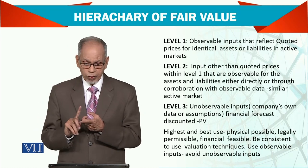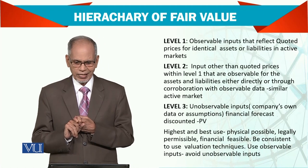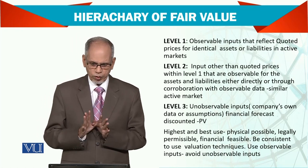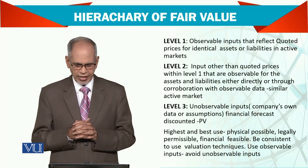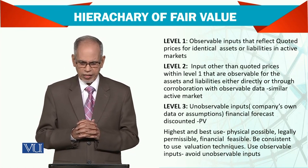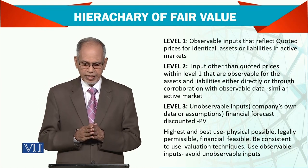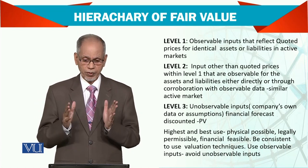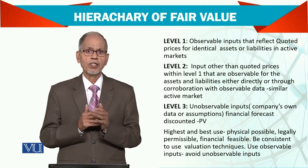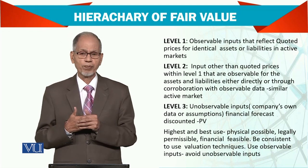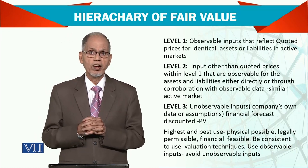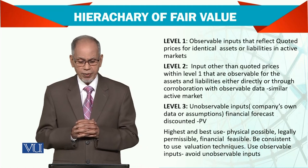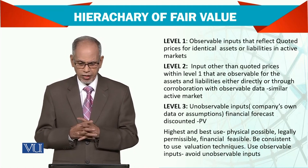Level 1 consists of observable inputs that reflect quoted prices for identical assets or liabilities in an active market — meaning you have full information about the market where buying and selling is happening. Level 2 consists of inputs other than quoted prices within Level 1 that are observable for the assets and liabilities, either directly or through collaboration with observable data or similar active markets — so if a quoted price is not available, we look at a similar market where this item is traded and observe its price. Level 3 consists of unobservable inputs based on company data or assumptions.